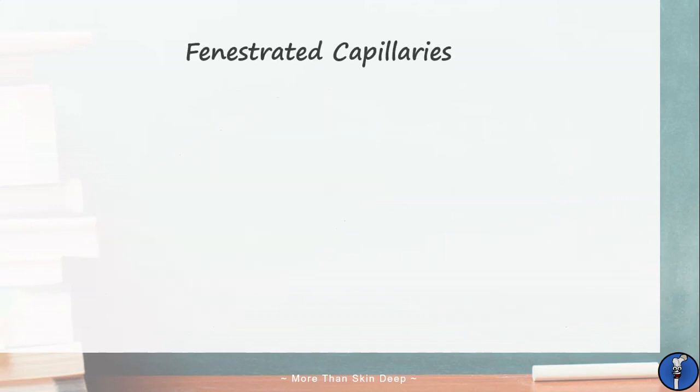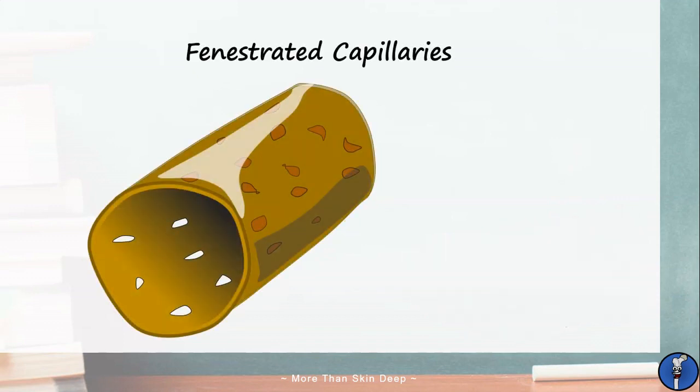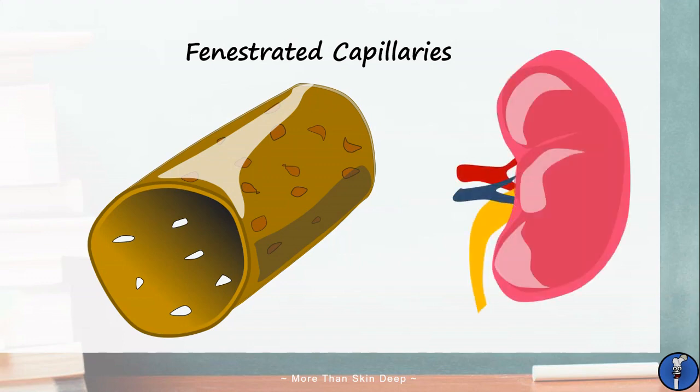Next we have fenestrated capillaries which have an intact basement membrane but have numerous small pores or fenestrations in their endothelium. These fenestrations derive their name from the Latin word for window and facilitate greater degrees of exchange, for example in the glomerulus of the kidney.